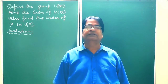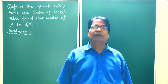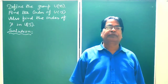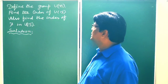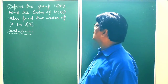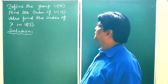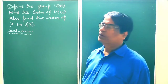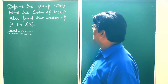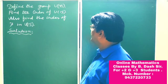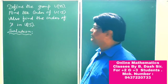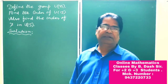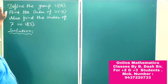Hello students, welcome to my channel. In this class, I am going to define the Euler group U of N, then we have to find the order of U of 15, and also we have to find the order of 7 in U of 15.